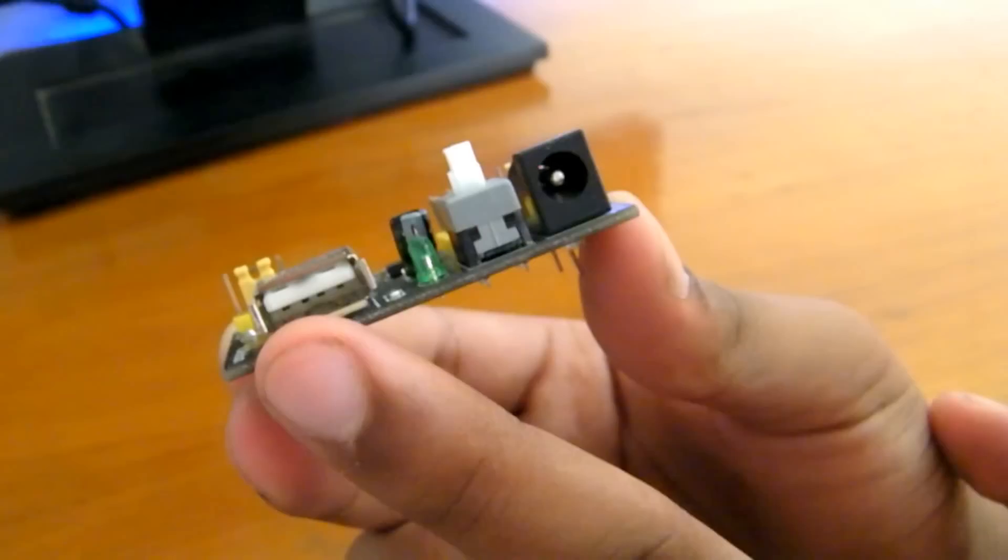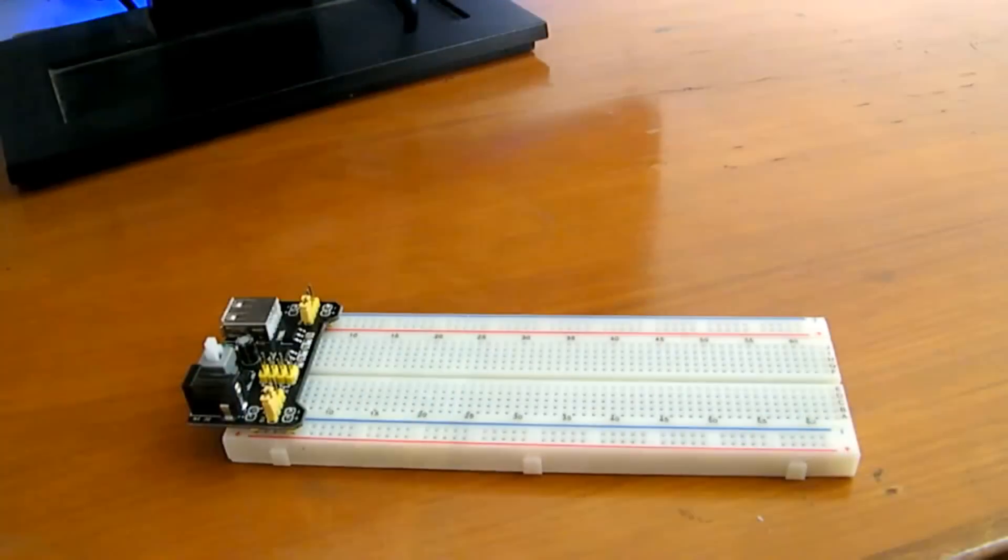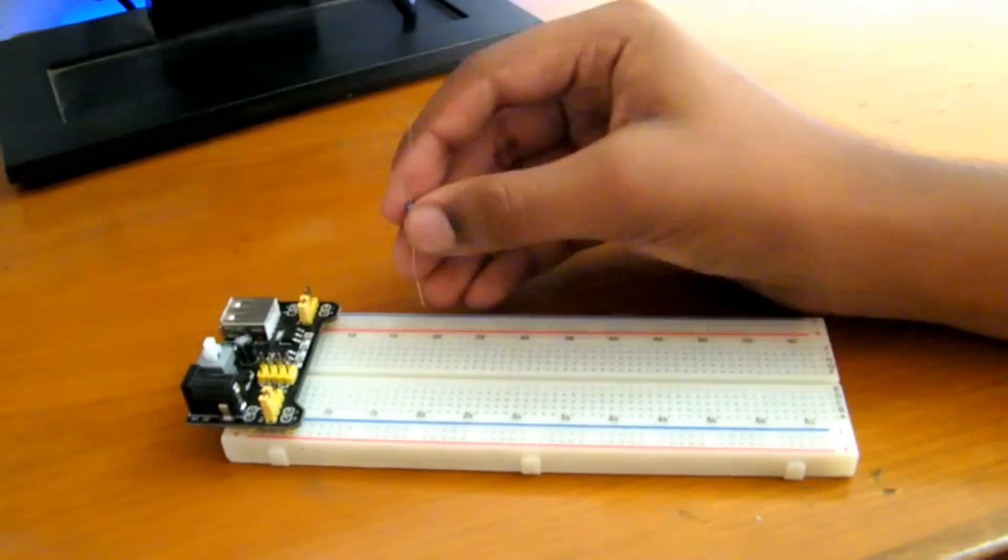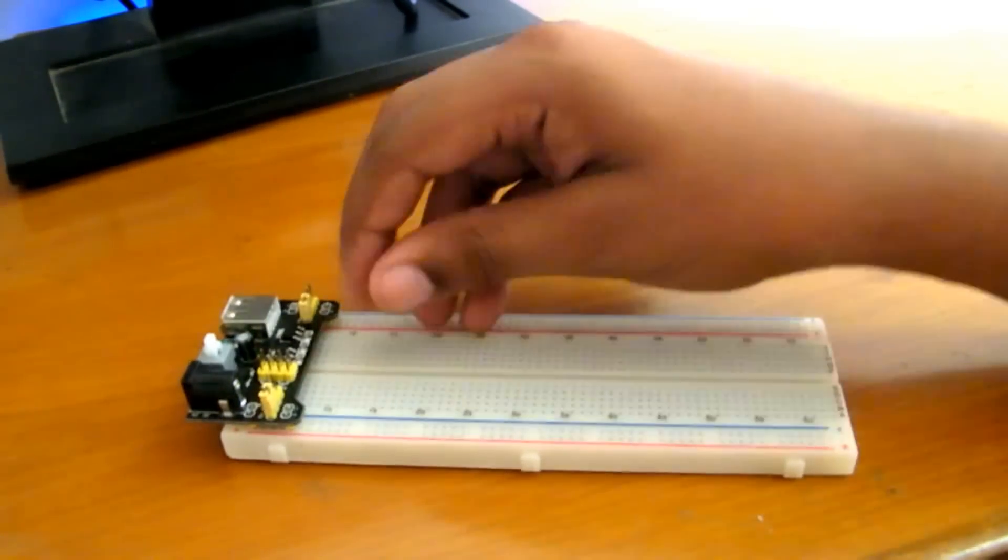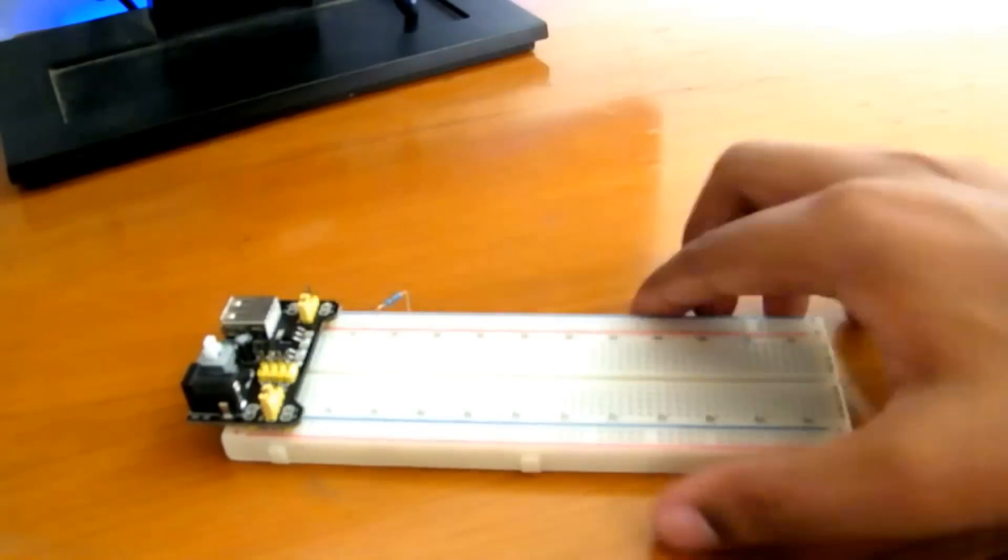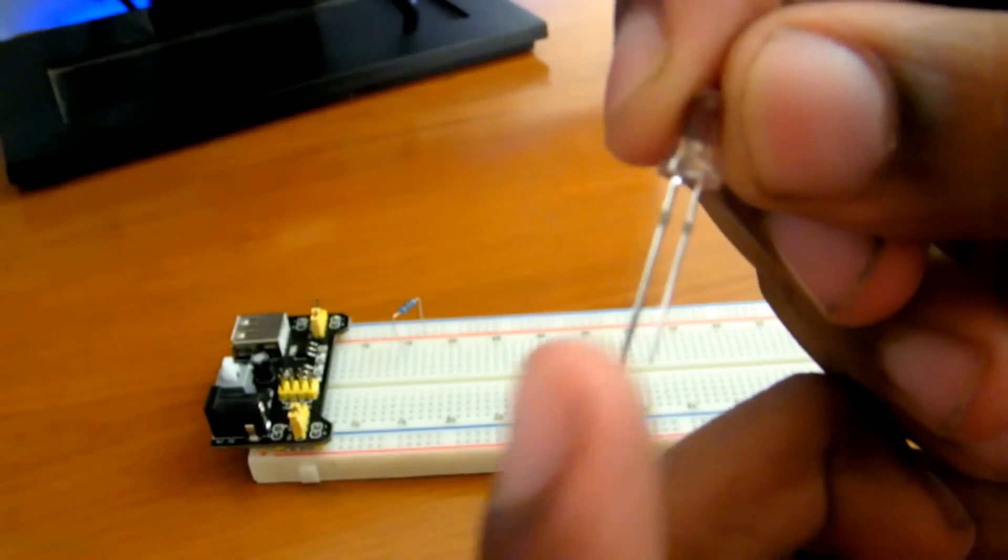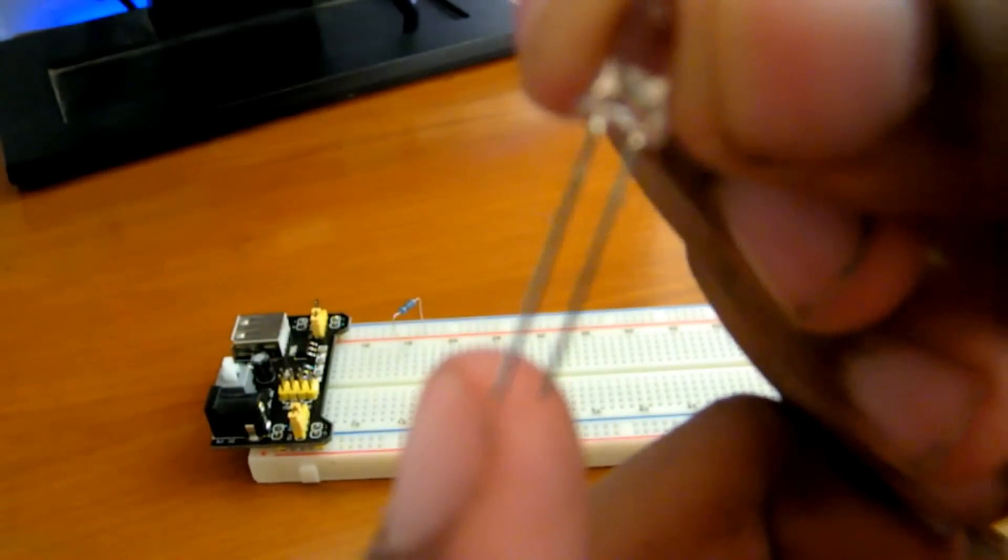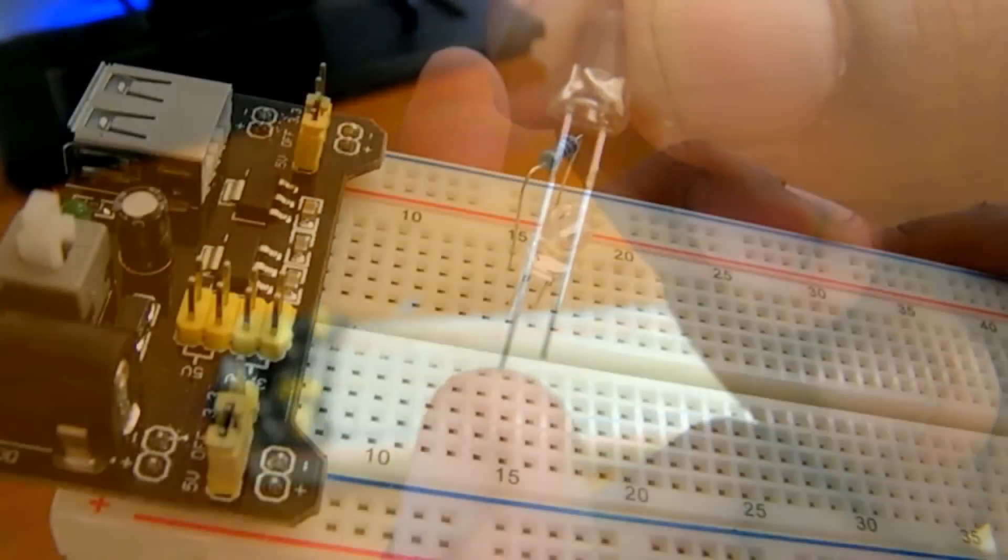So let's get to the circuit. Put one end of the 100-ohm resistor in the positive power rail of the breadboard and the other one in any row you like. Put the positive end of the LED—that is, the longer lead of the LED—in the same row as the resistor, and the negative end in an adjacent row.